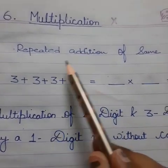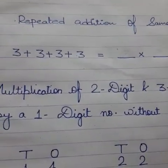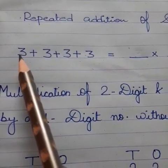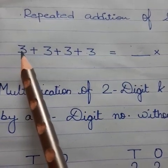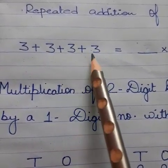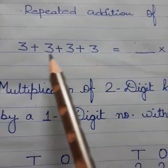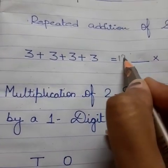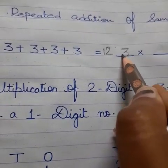Multiplication is the repeated addition of the same number. Look here — I have written the same number: 3 plus 3 plus 3 plus 3. This is the repeated addition of the same number. If we add these 3s, then what do we get? We get 12.